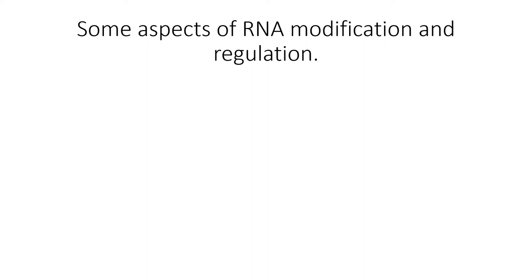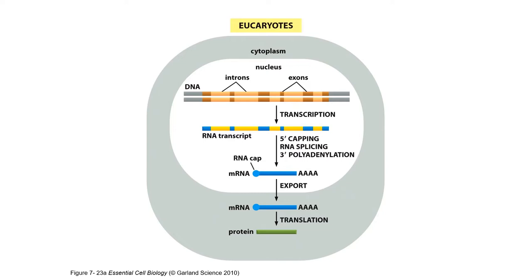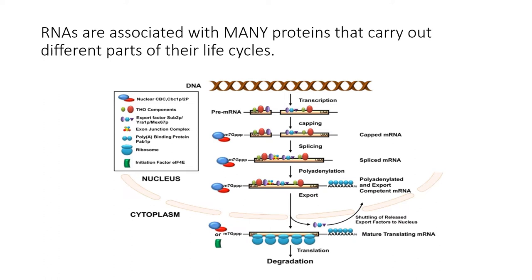Today we're going to talk about RNA modifications and the ways in which RNA can be regulated. In a eukaryotic cell, DNA is in the nucleus where transcription occurs; after processing, RNA is exported to the cytosol for translation. The picture is misleading though — at all stages of its life cycle, RNA is associated with many proteins, including the cap binding complex, splicing proteins, export factors, poly-A binding proteins, and ultimately the ribosome.